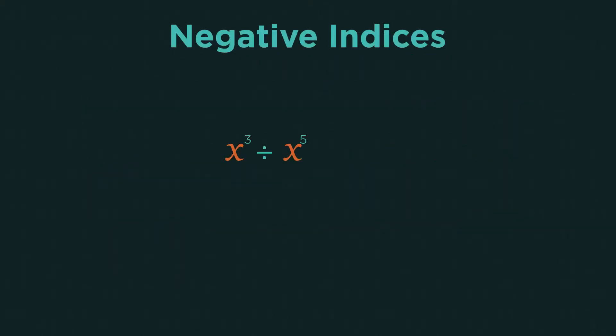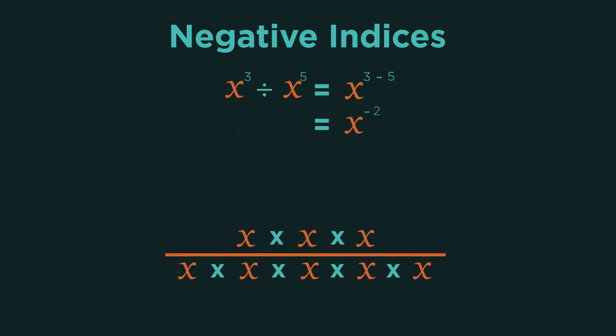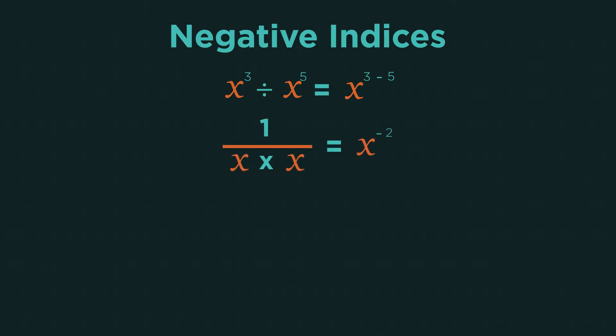So let's have a look at this question. Using the dividing indices law, we subtract the powers and we get x to the negative two. If we write this question out in full as a fraction, like this, and then simplified it, we end up with everything cancelled on top, so the numerator is one and two x's in the denominator. So we have one divided by x squared.